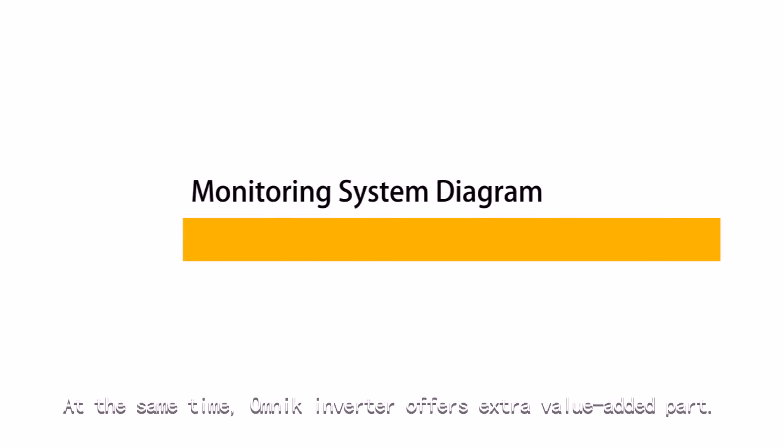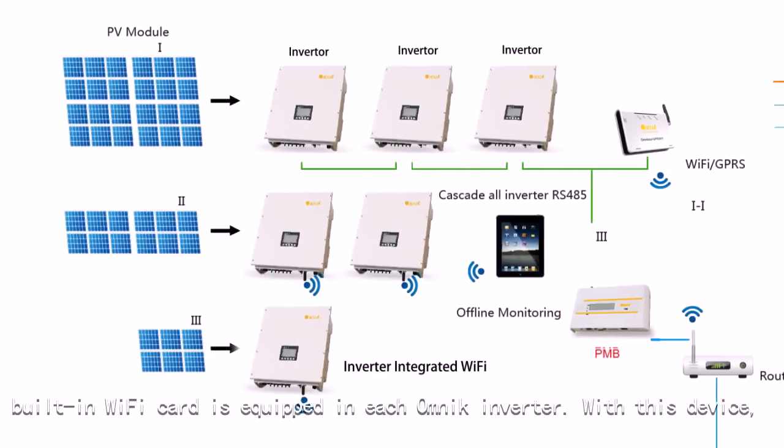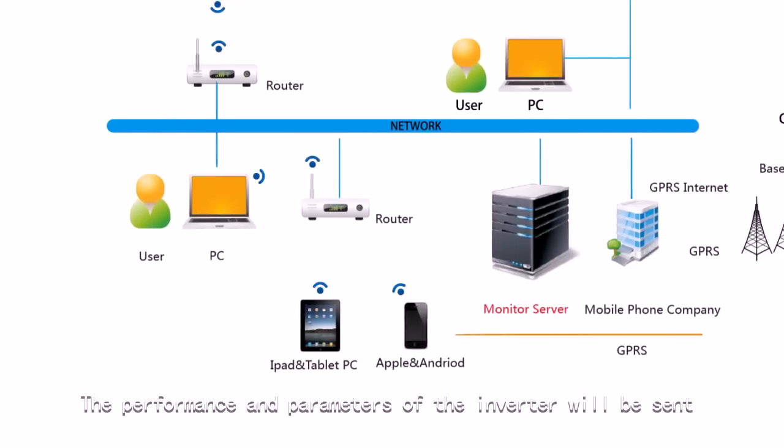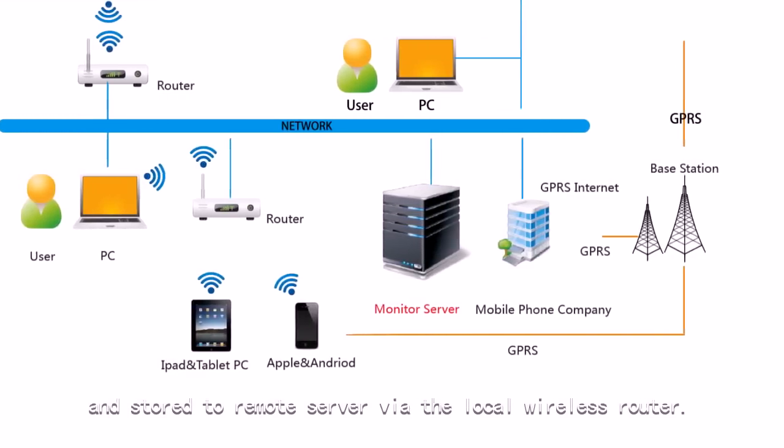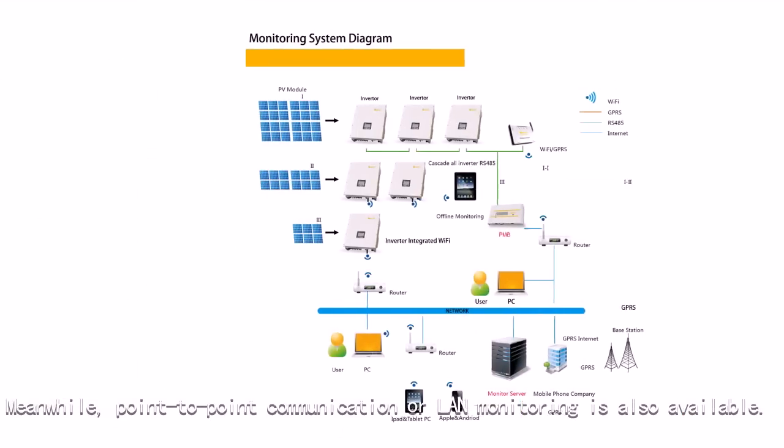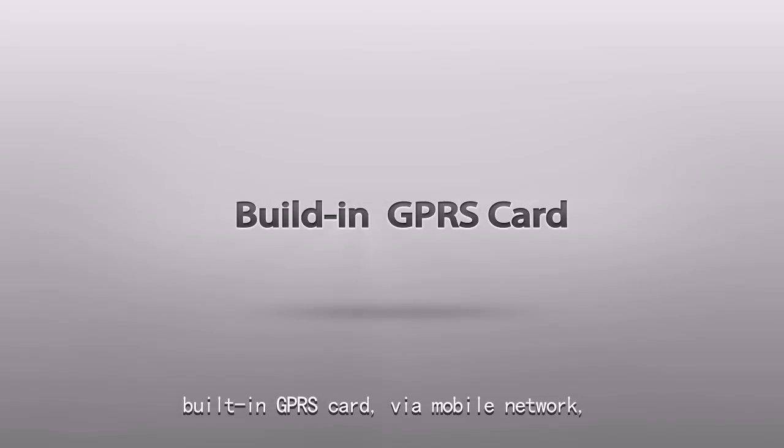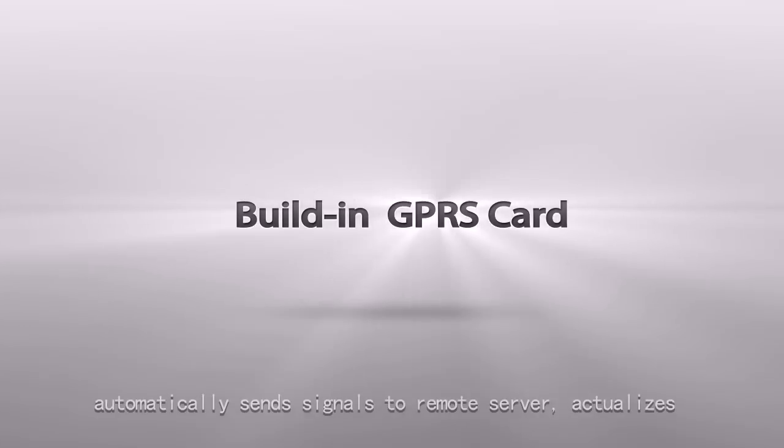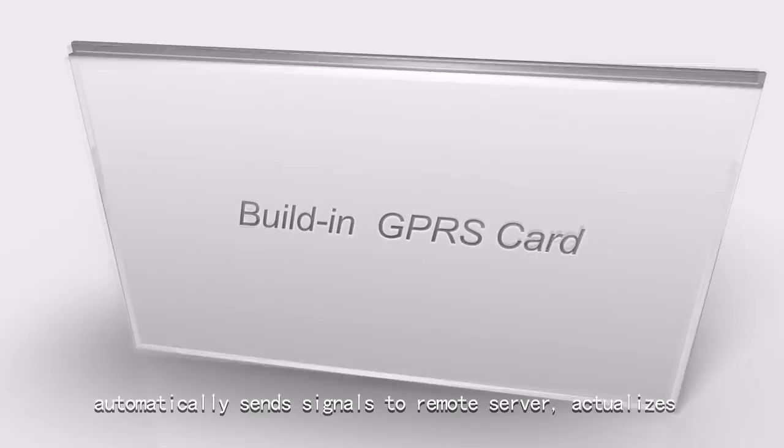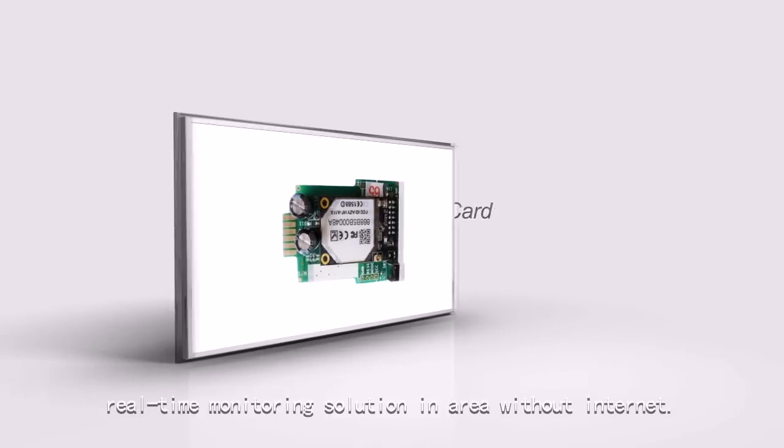Omnic inverters offer extra value-added features. Built-in Wi-Fi card is equipped with each Omnic inverter. With this device, the performance and parameters of the inverter are sent and stored to remote server via the local wireless router. Meanwhile, point-to-point communication or LAN monitoring is also available. Built-in GPRS card via mobile network automatically sends signals to remote server, actualizing real-time monitoring solution in areas without internet.